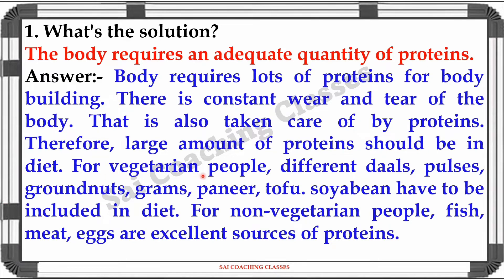For vegetarian people, different dals, pulses, groundnuts, grains, paneer, tofu, and soya bean have to be included in the diet. For non-vegetarian people, fish, milk, and eggs are excellent sources of proteins.